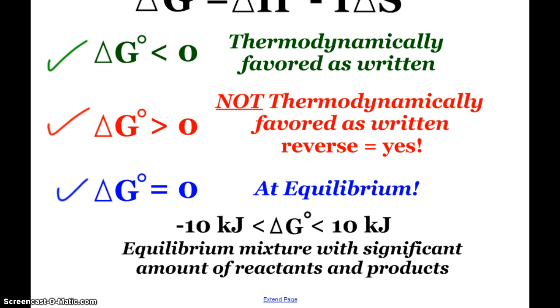So what you want to note is that, yes, the sign of ΔG will explain to us whether or not something is thermodynamically favored, but also the magnitude. If ΔG is in the negative 10 kilojoules to positive 10 kilojoules, that's pretty close to equilibrium. And so you would say that the mixture is going to have significant amount of reactants and products.